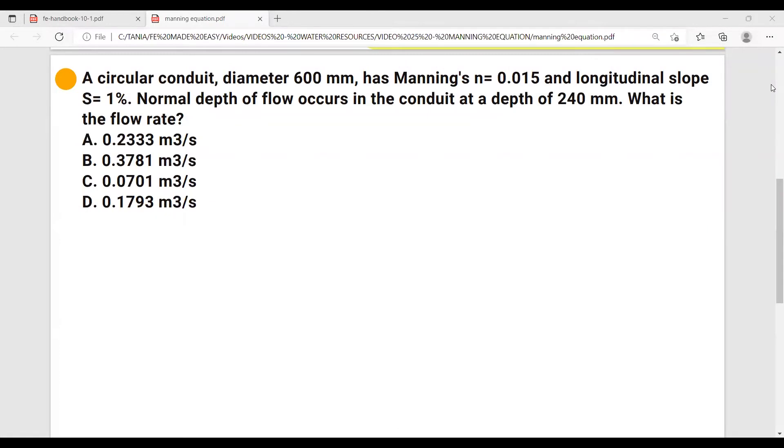A circular conduit, diameter 600 millimeters, has Manning coefficient n equals 0.015 and longitudinal slope S equals one percent. Normal depth of flow occurs in the conduit at a depth of 240 millimeters. What is the flow rate?